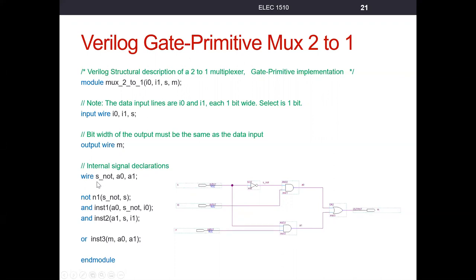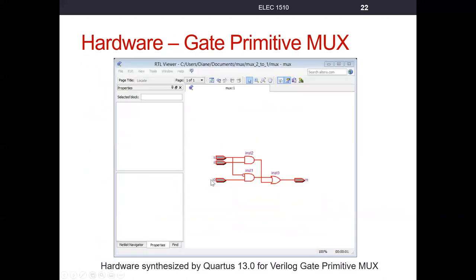Within the module I've declared the internal signals S-not, A-zero, and A-one. These are internal to the module — not part of the port list — only needed internally to create the circuit we want. The only things in the port list are the connections to the outside world: select, input lines, and output line. If we put this into software like the Quartus IDE that can synthesize Verilog hardware, it gives us two AND gates, an OR gate, and a NOT gate — exactly the gates we specified. We'd expect that with gate primitives.